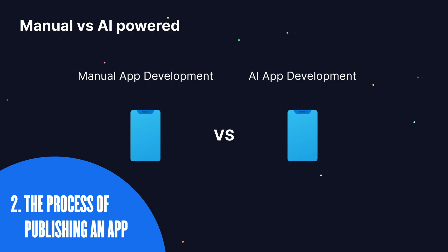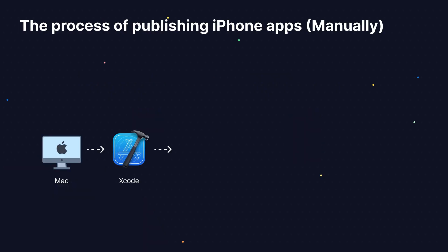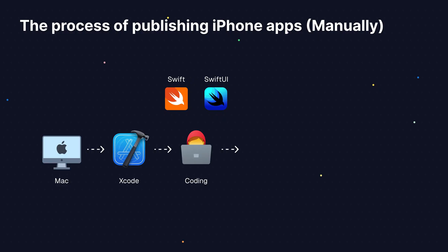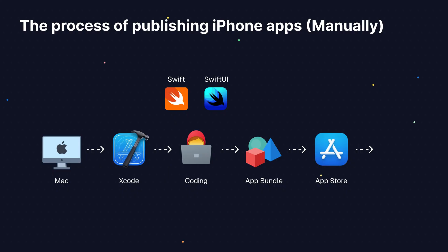To better understand how AI helps you, let's walk through the normal process of making an iPhone app. First, we use a Mac computer and download the official development app from Apple called Xcode. Inside Xcode, we write the code for the app. There are two types of code: Swift code for the app logic, and SwiftUI code for the user interface — the screens that the user sees. Then we compile the app, which means we take all the code and translate it into machine code that computers can understand, and package that into a bundle. That bundle gets sent to the Apple App Store where users can browse for it, download it, and install it onto their iPhones.